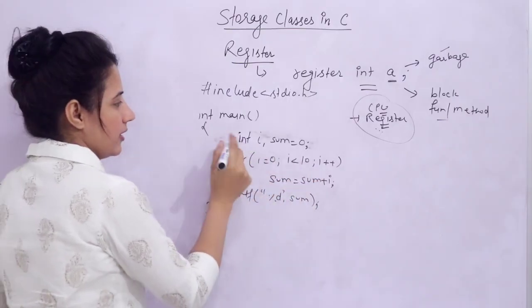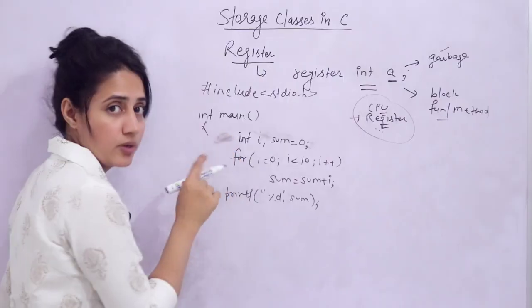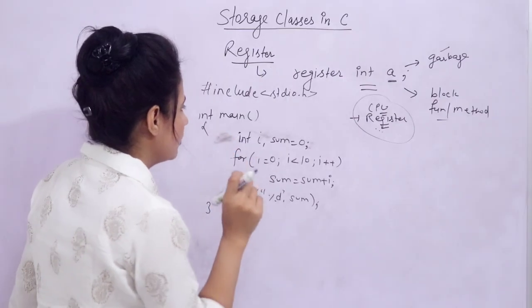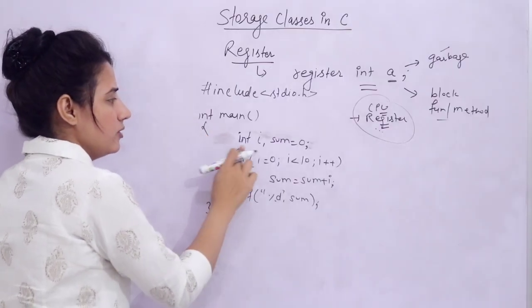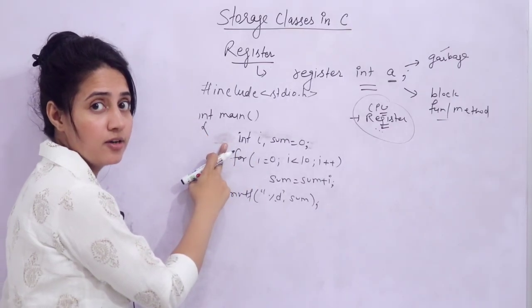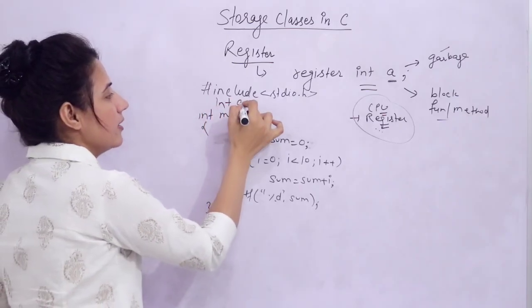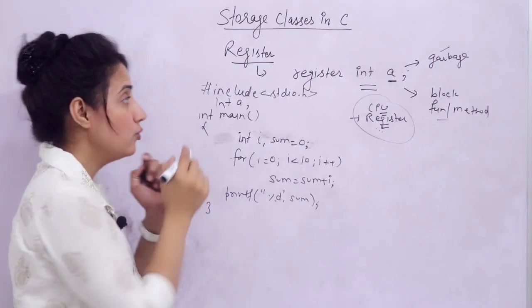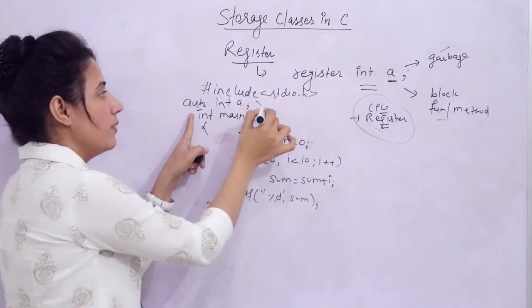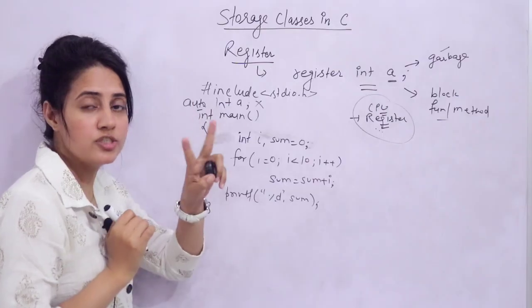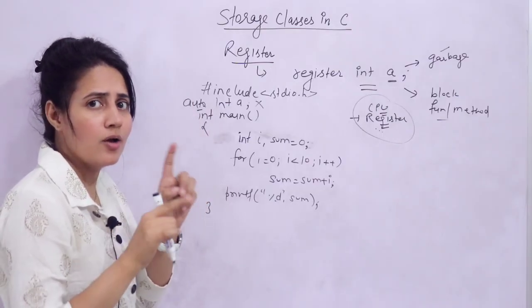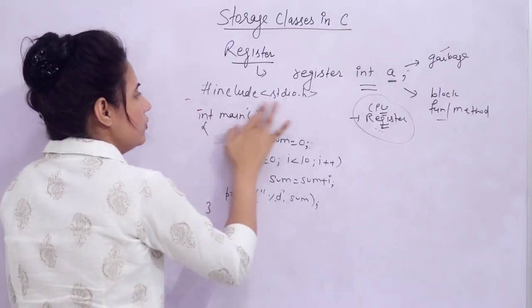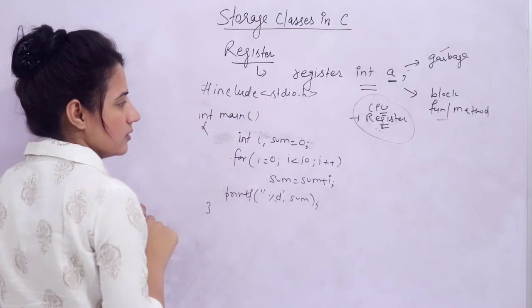Now the question I wanted to ask is: if a variable with no keyword is auto by default, and if I write 'int a' globally, that would also be considered auto. But in the previous video I said global declaration of auto is not allowed. So these two statements seem contradictory — how do you justify this? Think about this.